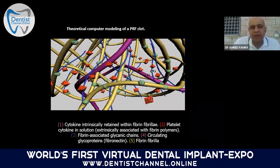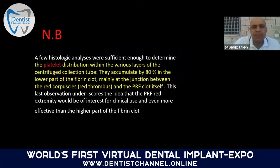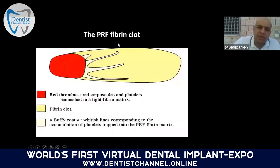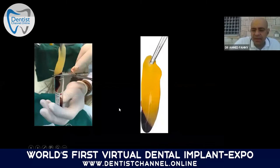This photograph illustrates the function of PRF and the platelet clot. Again — never forget: 80% of growth factors form at the junction between the yellowish part and the reddish part of the tube. This junction must always be included when harvesting PRF. You must take approximately two millimeters of red corpuscles with it. Do not cut at the yellow-red boundary — you must take that portion.